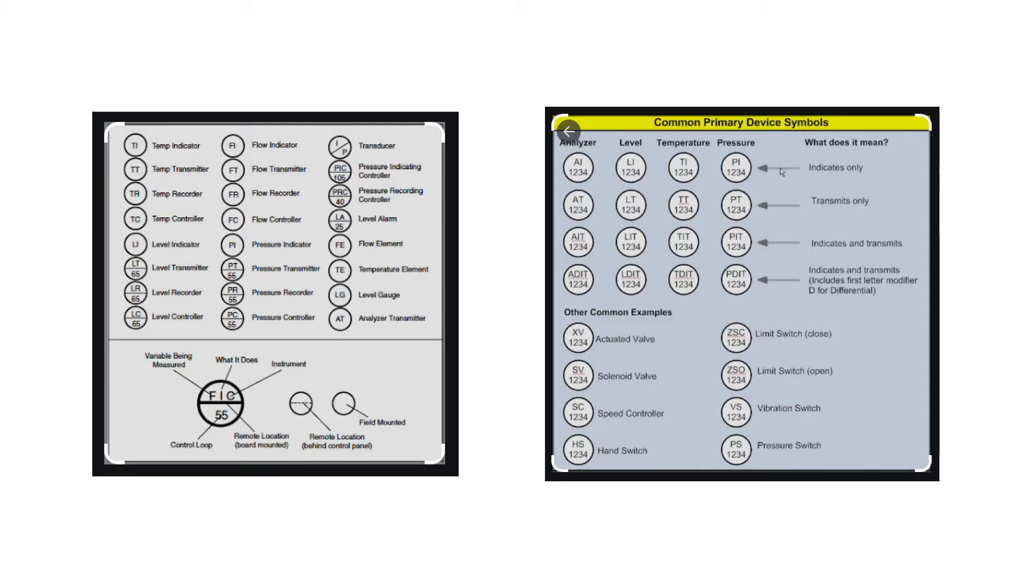So on these P&ID tags you'll see that they can indicate temperature, flow, level, pressure. You'll see other common examples on here of what these different letters and numbers mean. Some indicate pressure. Some also will transmit, like a transmitter. Some will both indicate and transmit as you can see in this key here. And they usually have a control loop number assigned to them. That's the bottom number in the tag.